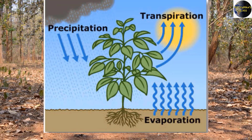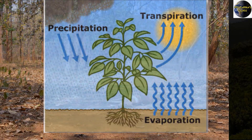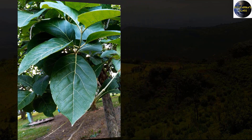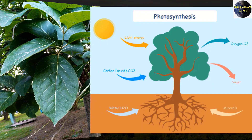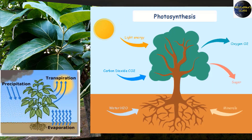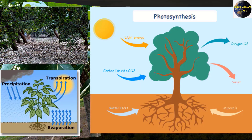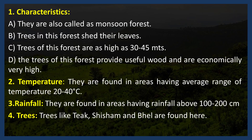Tropical deciduous trees usually have large and broad leaves. When water is plentiful, the trees take up water, and the large leaves use sunlight for photosynthesis. Excess water is removed through the leaves via transpiration. During dry seasons when water is scarce, it becomes necessary to conserve available water, so leaves are shed to limit transpiration. These forests spread over regions that receive rainfall between 100 to 200 cm.